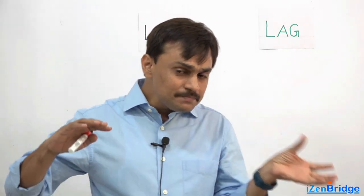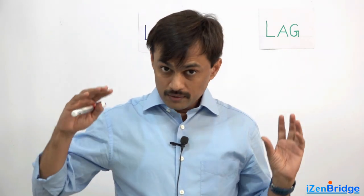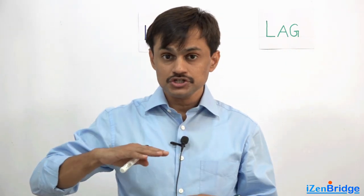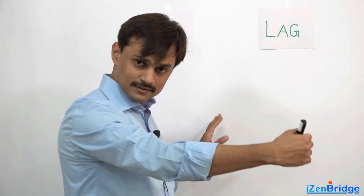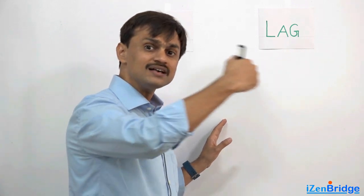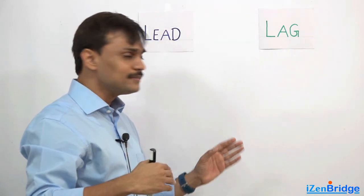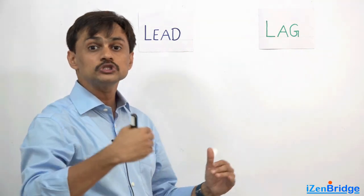Lead and lags. We spoke about relationships between two activities, and sometimes we need to speed up the dependent activity or delay the dependent activity while keeping the relationship as it is. This is the purpose of doing lead and lag. Lead means like a leader, a little bit faster, ahead. Lag means lagging, a bit slow.